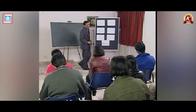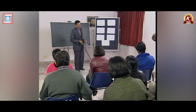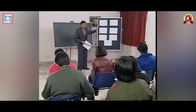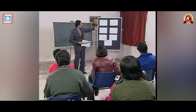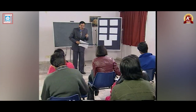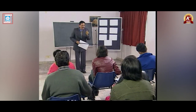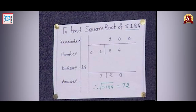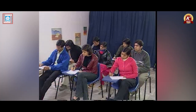Find the square root of 5184. We write the given number 5184 and group it from right to left. There are four digits, so two groups: first 84, second 51. The nearest lower number whose square is nearest to 51 is 7, since 7 squared is 49. So 7 is the first digit of the answer. The divisor is 7 into 2 equals 14. And 51 minus 49 equals 2, which is the first digit of the remainder.